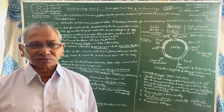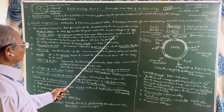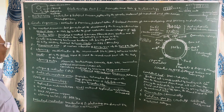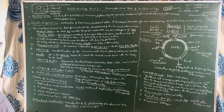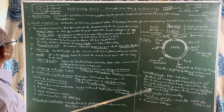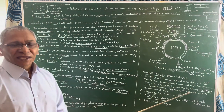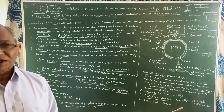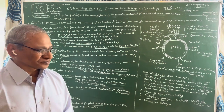In the year 1972, Boyer and Cohen combined a plasmid with foreign DNA and introduced that plasmid into a bacterial cell. This is one of the important steps in the field of biotechnology.